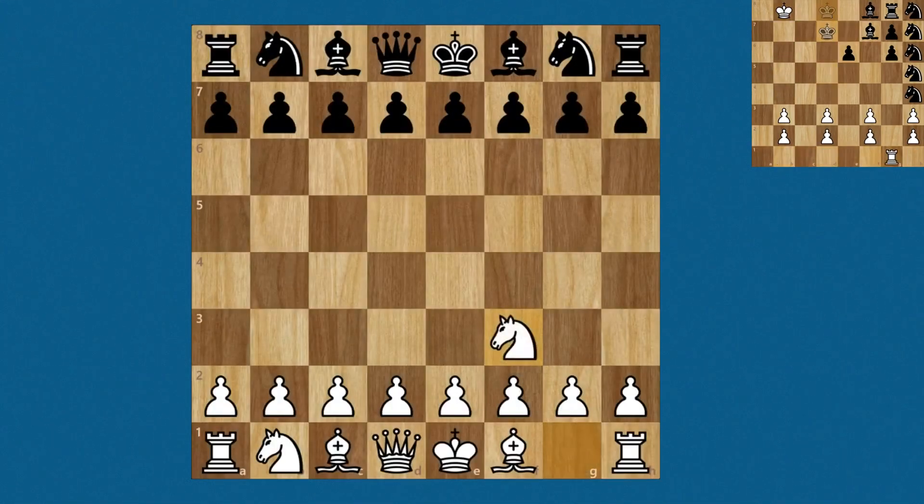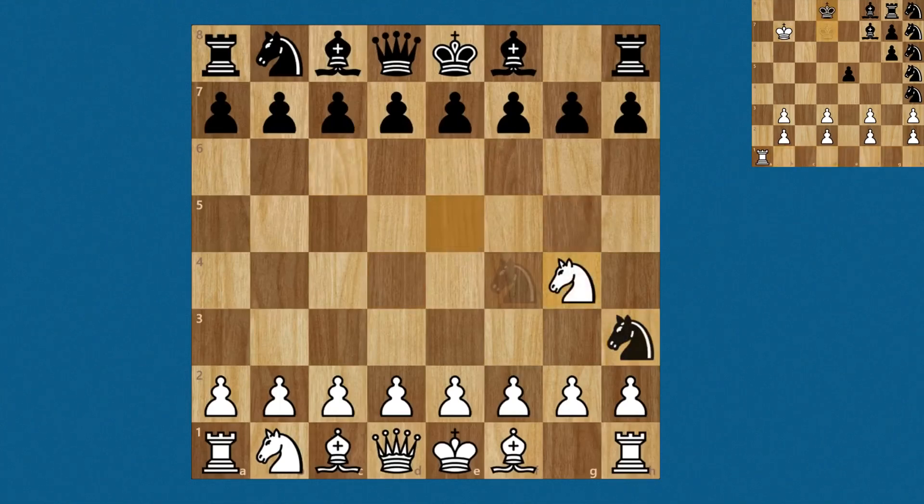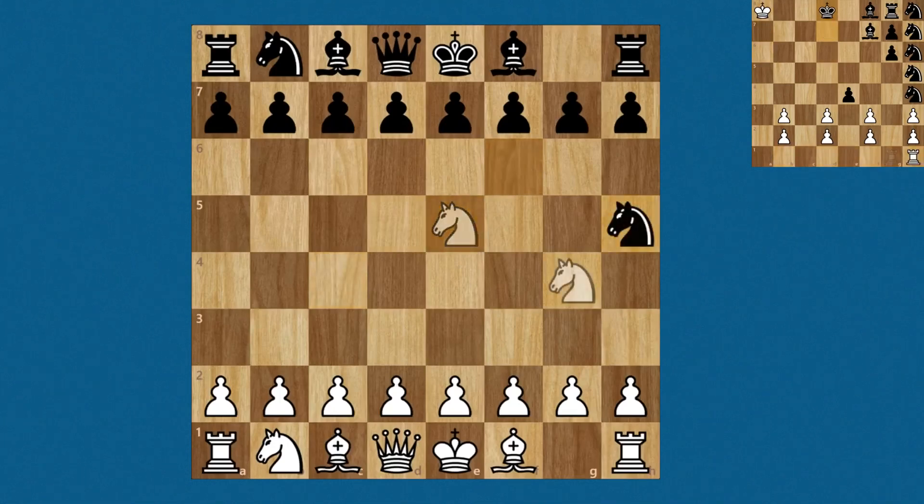When we start the game, we are able to use our knights to move around, which are able to jump over the pawns at the start of the game. This means we don't have to waste any refreshes at the very start by moving pawns to allow pieces to move around.